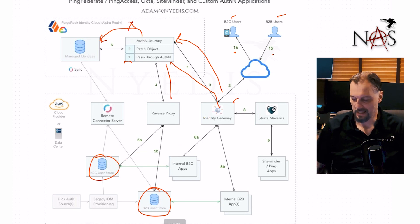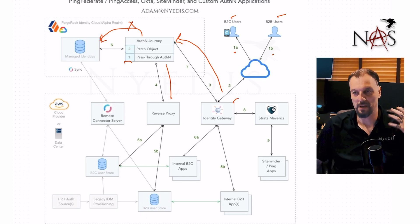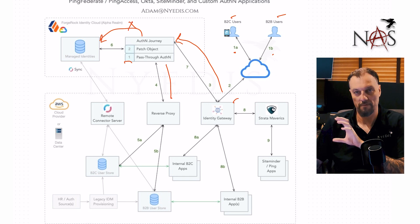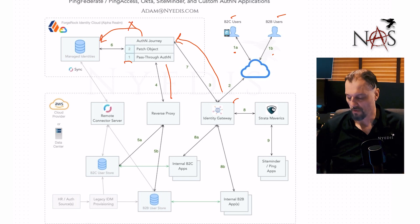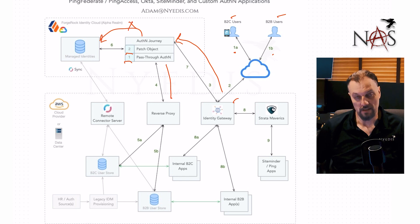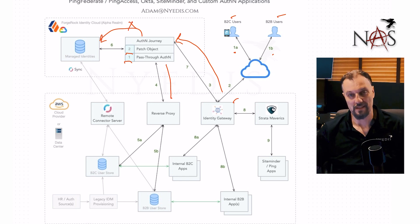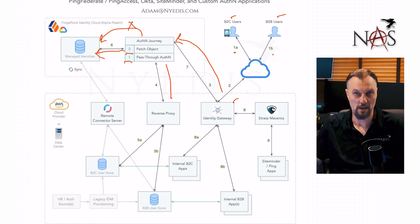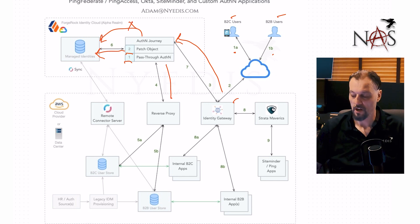You can also route through the Identity Gateway to the identity store, but I prefer the Identity Gateway to do what it's really meant to do — manage the ForgeRock session object, not just route traffic. We route the simple bind through a proxy, hit the B2B user store, and it comes back successful. The second node in the journey is the patch object node, which updates the password in the managed identity store in the cloud. Now the next time the user logs in, authentication passes immediately.